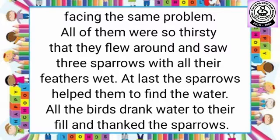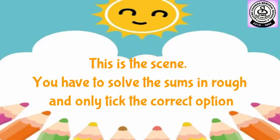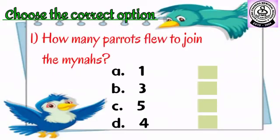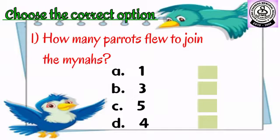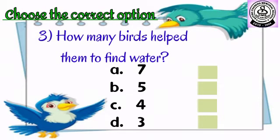So this is the story. Now you have to read all the given questions by your own. After that you have to solve the sum in rough and you can only take the correct option.